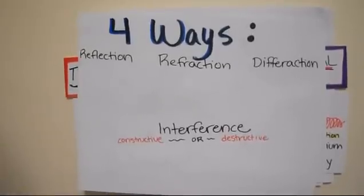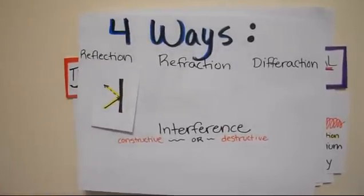Reflection is when a wave hits a barrier and bounces back at the same angle with equal and opposite force. In other words, think of a mirror and how light bounces off of it.